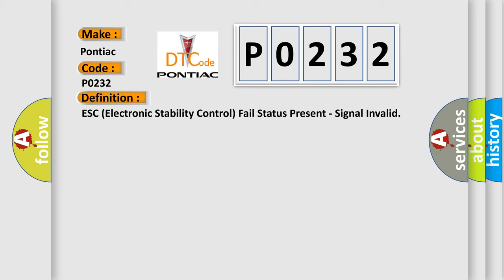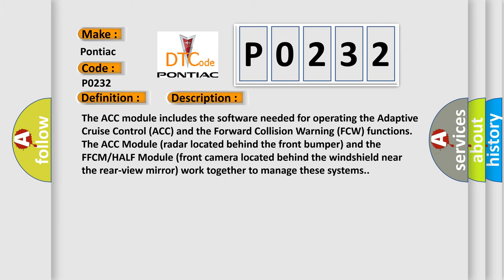And now this is a short description of this DTC code. The ACC module includes the software needed for operating the adaptive cruise control (ACC) and the forward collision warning (FCW) functions.